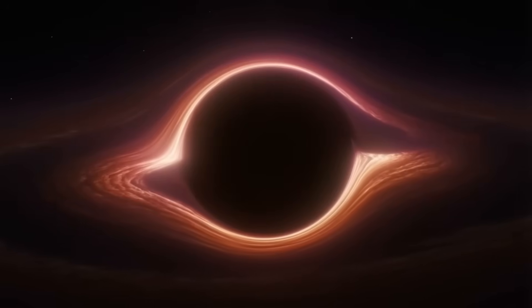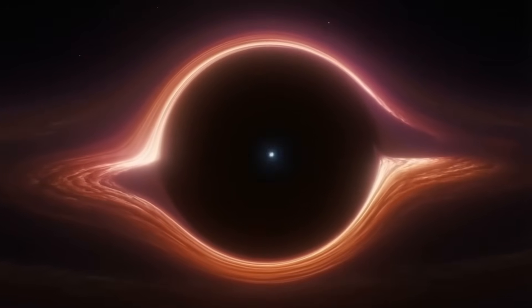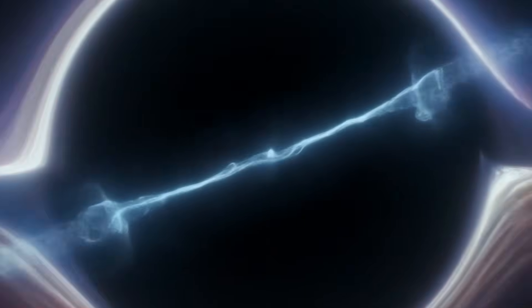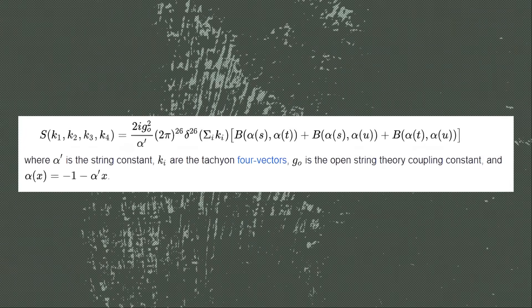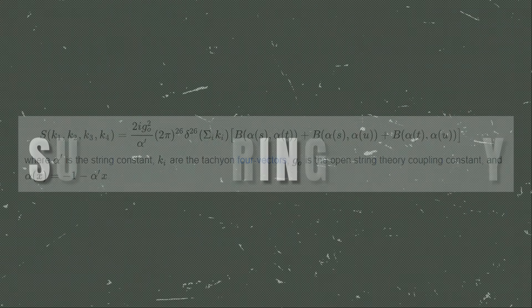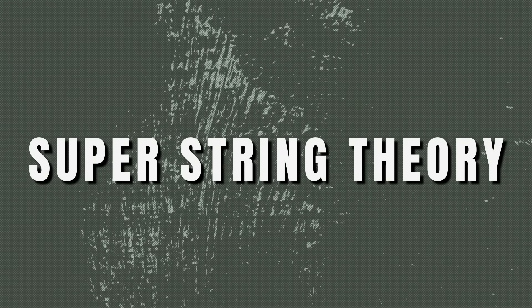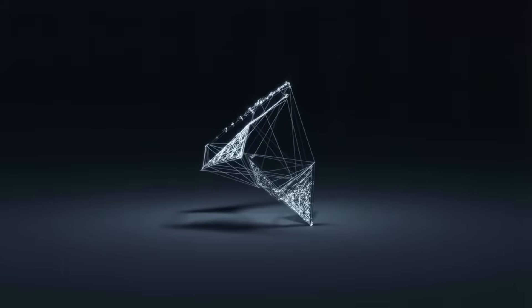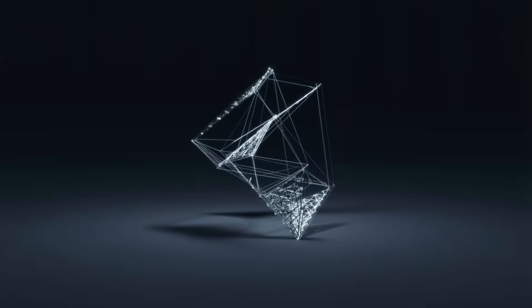This time, the strings weren't describing protons or mesons. They were describing everything. Matter, forces, and even gravity itself. The Veneziano amplitude, the forgotten 1968 equation, was rediscovered as the seed of superstring theory, the leading candidate for a theory of quantum gravity. Gabriele's accidental formula had become the cornerstone of a new vision of the universe.